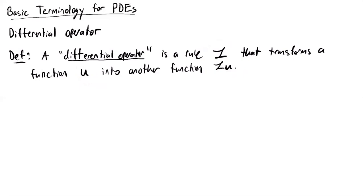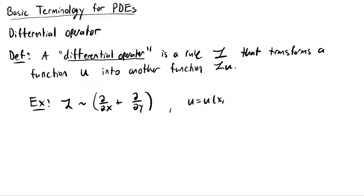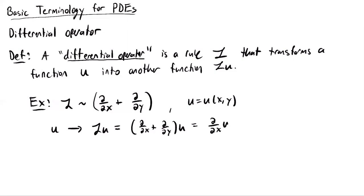Let me define an operator L to be the rule: take the derivative with respect to x, then add that to the derivative with respect to y. Suppose U is a given function of x and y. Then L of U is given by applying these rules to U — distributing as you would with multiplication — so this ends up being d/dx of U plus d/dy of U, or in shorthand, Ux plus Uy.